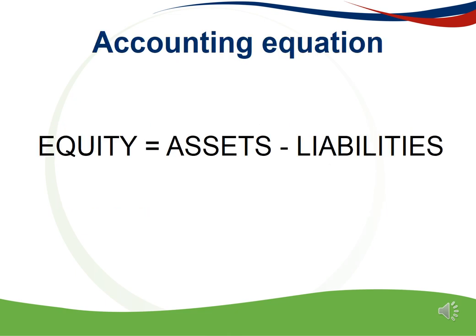All transactions are recorded by applying the double entry system. The logical way to record these transactions can be explained by way of the accounting equation. The equation states that equity equals assets minus liabilities. This is a mathematical equation and should always be in balance. This means that for each transaction, you will need two entries to ensure that the equation stays in balance.